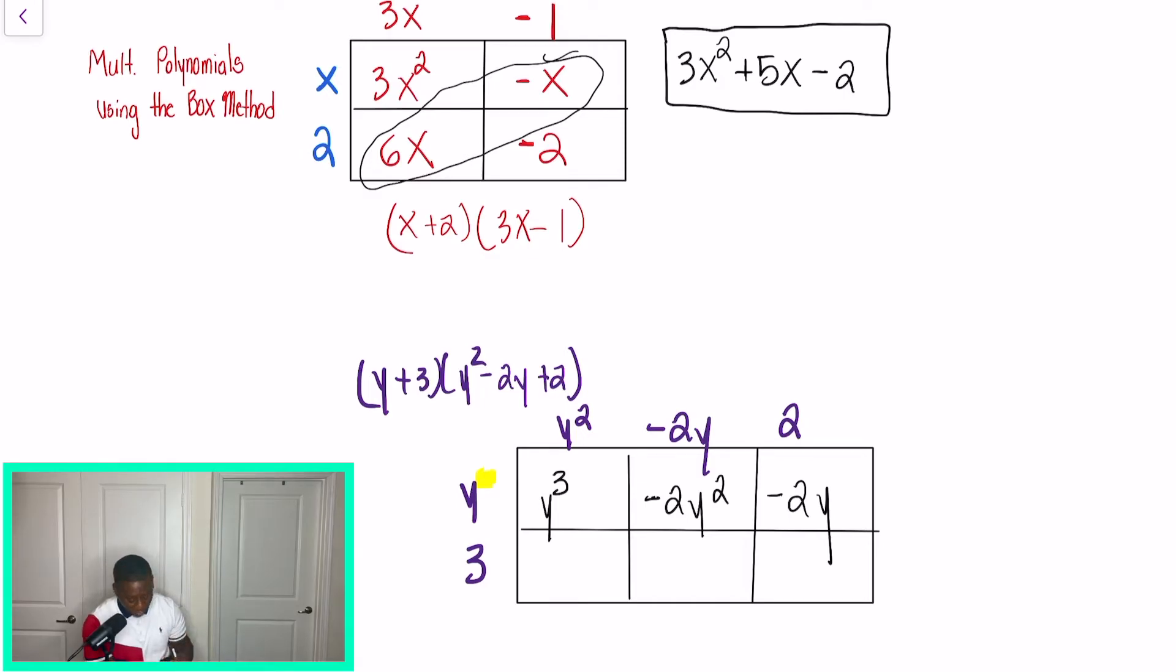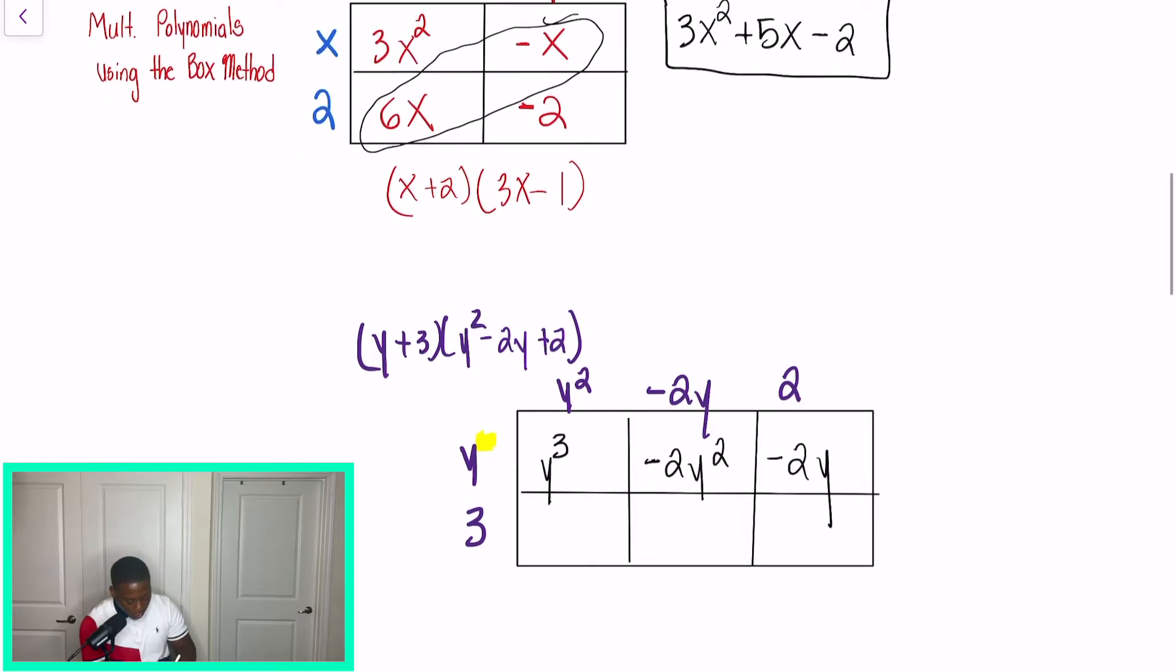Now we're going to go back and do the same thing for three. So we'll get 3y to the second power, negative 6y, and we'll get six. And even though it doesn't seem like it, those diagonal terms, it still follows that like terms rule. So here goes our first set of like terms. And then here goes our second set of like terms. So as you can see, y to the third is going to stay the same, and that six is going to stay the same.